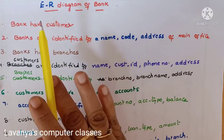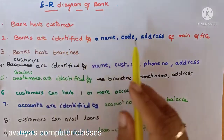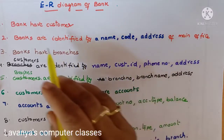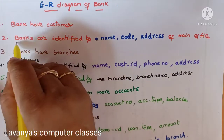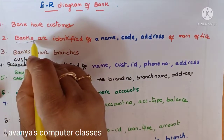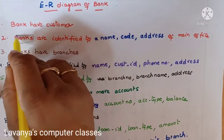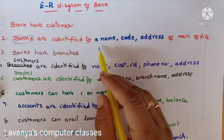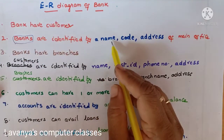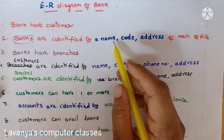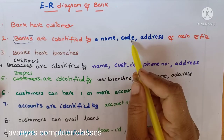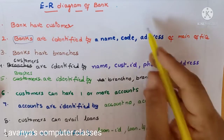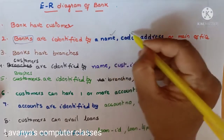What are the entity sets and what are the attributes? Bank is an entity set. What are the attributes of the bank? They are already mentioned in the description — that is name, code, and address.